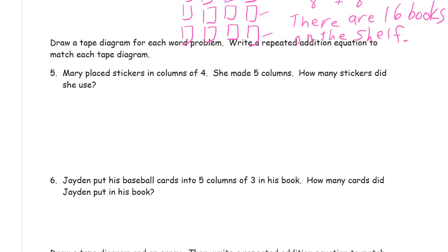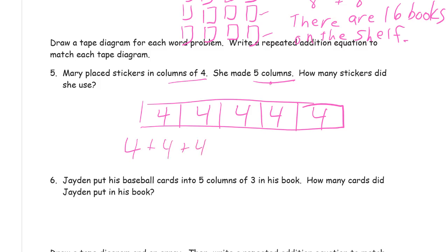And now we're drawing tape diagrams for word problems. And then write a repeated addition equation to match the tape diagram. Mary placed stickers in columns of four and she made five columns. So, you need five columns with four in each column. The columns are the groups. So, that's five groups of four. So, we need five groups. There's our piece of tape. Five groups. And four in each group. And now we add the fours. And that's twenty.